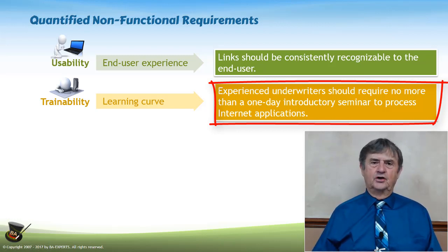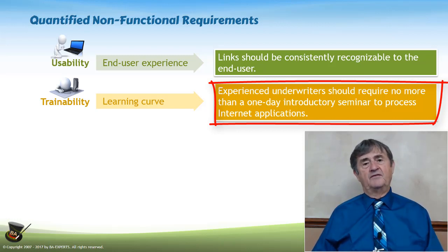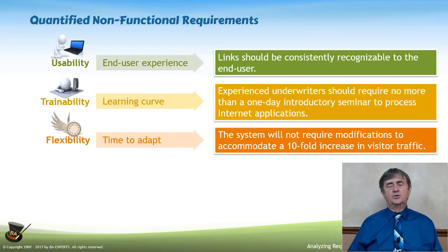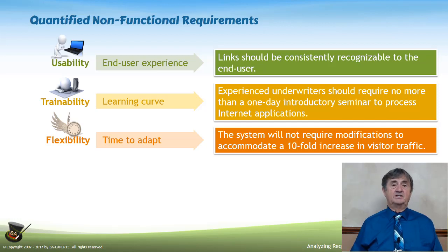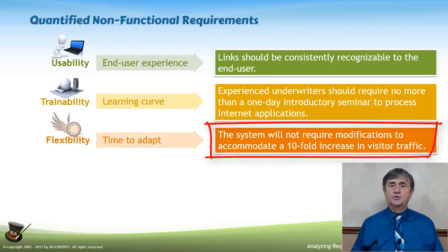You can see the dimensions of the learning curve by identifying a role — experienced underwriters — with a qualifying characteristic, meaning with a minimum amount of training they should be able to perform a certain task. Flexibility has to do with how quickly the application can respond to changes in the environment. For example: the system will not require modifications to accommodate a tenfold increase in visitor traffic. These requirements start to have numbers, and by virtue of having numbers they become testable or verifiable.